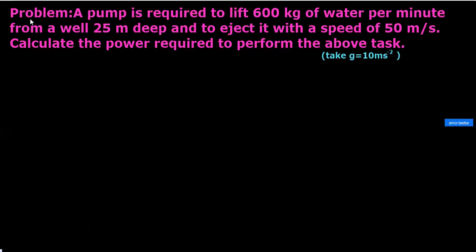Hello everyone, see this problem: a pump is required to lift 600 kg of water per minute from a well 25 meters deep and to eject it with a speed of 50 m/s. Calculate the power required to perform the above task. This is a very simple problem. There is a well and there is a pump used to lift the water.